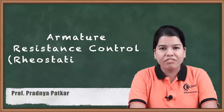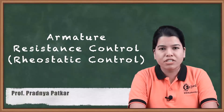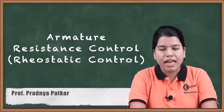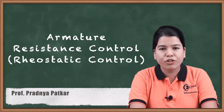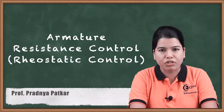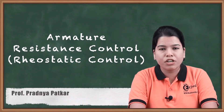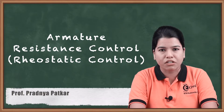Hello friends. In the previous video we studied the equation for speed and speed regulation. Now in this video we are going to study the methods to control the speed of a DC motor. The first method is armature resistance control. Let us study this method in detail.